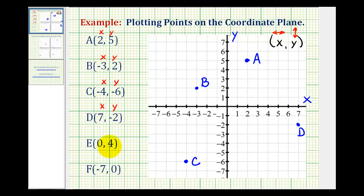For these last two examples, notice how one of the coordinates is zero, but we'll follow the same rules. For point E, the x-coordinate is zero and the y-coordinate is four. Since the x-coordinate is zero, we're not going to move left or right — we'll stay at the origin — and then move up four units because the y-coordinate is positive four. Point E with coordinates zero, four would be right here.